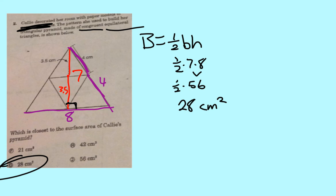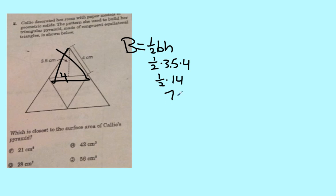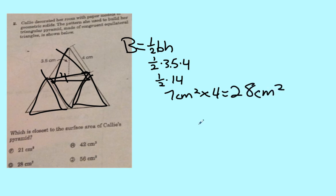If you wanted to do it the other way, you could have found the area of this one instead. Still one half times height. This would be 4 here, so this would be one half of 3.5 times 4. 3.5 times 4, that's 14. Half of 14 is 7, which means each of these triangles has an area of 7 centimeters squared. But there are 1, 2, 3, 4 of them, so you'd have to do 7 times 4 is 28.